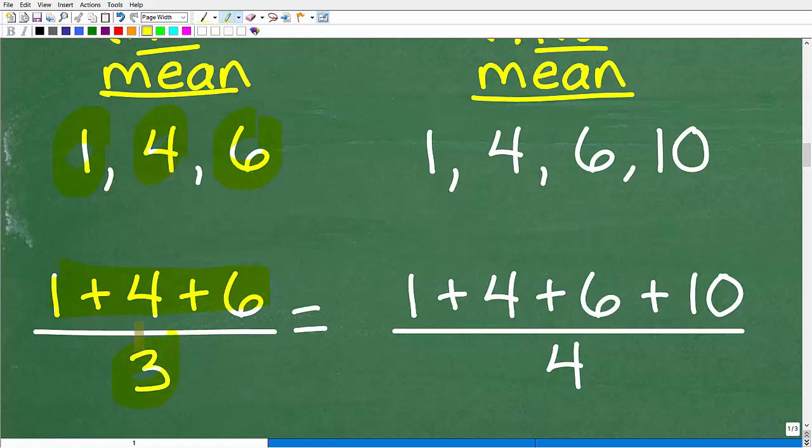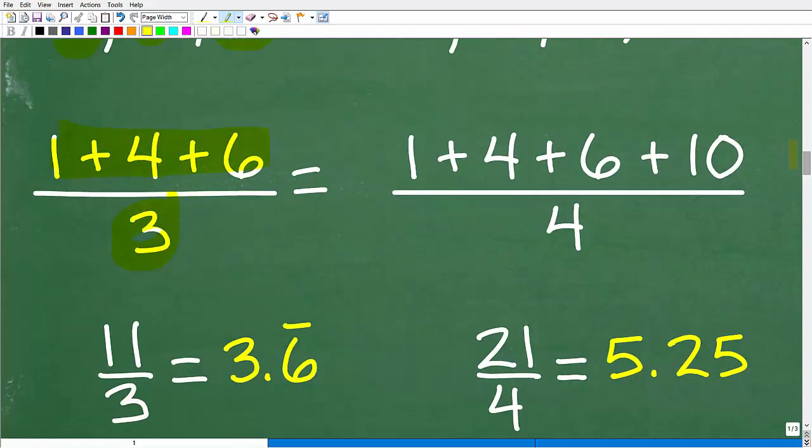So 1 plus 4 plus 6 divided by 3 will give us the answer. So 1 plus 4 plus 6, so 4 and 6 is 10, and then 10 plus 1 is 11. So 11 divided by 3. When we go into our calculator and take 11 divided by 3, we're going to get 3.6 repeating. So that is the mean there for that particular problem.